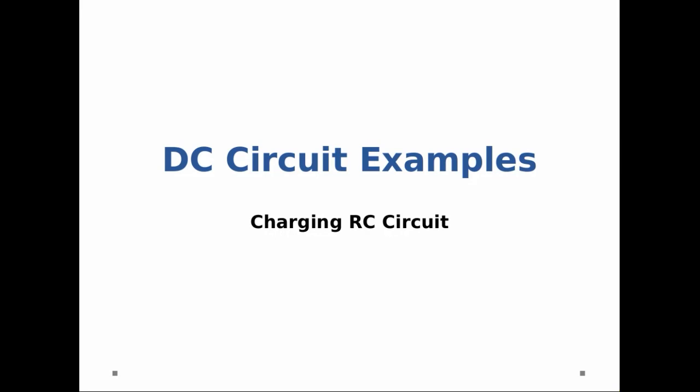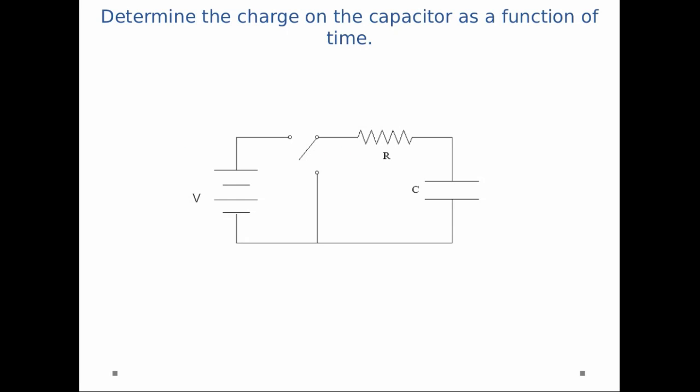In this example, we're going to look at a DC circuit, specifically a charging RC circuit. I give you a circuit that has a battery with voltage V, resistor with resistance R, and a capacitor with capacitance C, and I ask you to determine the charge on the capacitor as a function of time. Now everything is initially uncharged, and the switch closes upward at time t equals zero seconds. So we can solve this problem using Kirchhoff's loop rule.